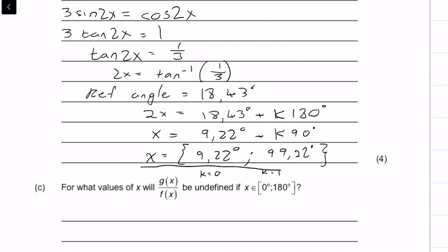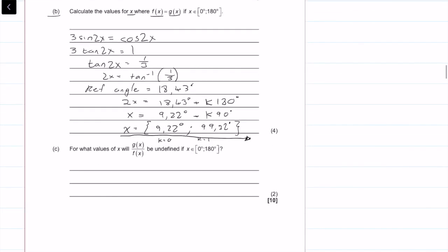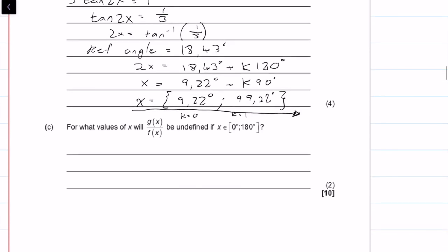So there is the answer. Next we say, for what values of x will g of x over f of x be undefined? Undefined, very important, undefined when the bottom is equal to 0. So undefined.